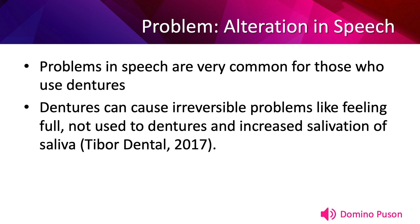This is Domino Pusson. I will discuss the fourth problem for older people who are using dentures: problems with speech and communication. Problems in speech are prevalent for those who use dentures. Dentures can cause reversible problems like feeling full, not being used to dentures, and increased salivation. Unfortunately, dentures also cause several irreversible issues. For instance, jaw bone loss plays a big part in the development of bone recession that needs readjustment or relining every few months. This condition impacts the speech and communication of an older person using dentures and the patient's nutrition.